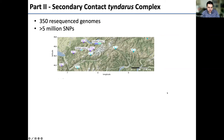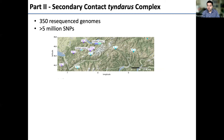Today I focus primarily on Tindarus and Cassioidus. With Hannah, we collected samples from two contact zones of these species in Switzerland, plus allopatric populations of each. We generated genomic data: 350 resequenced genomes, a reference genome assembly for Cassioidus, and ended up with approximately 5 million SNPs. Principal components analysis shows PC1 explains 80% of total variation — massive given 5 million SNPs — clearly separating the two species, and we found only two F1 hybrids.